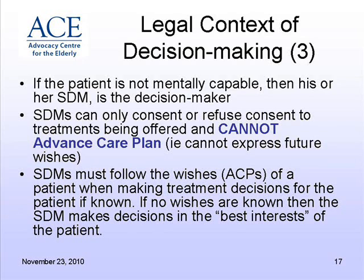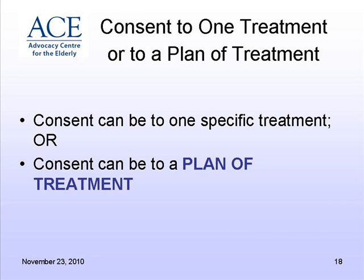If the substitute knows of wishes — such as an advanced care plan made by the patient — then they have to comply with that. If there are no known wishes, they have to act in the person's best interest. Consent can be to a specific treatment or to a plan of treatment. There is often confusion about what the substitute can do here. A substitute can consent to a plan of treatment — for example, a decision about CPR based on the patient's current health condition. But they can't say that someday if a surgery might be needed they'll consent now. As a person, I can say I wouldn't want to be hooked up to machines, but my substitute cannot do that — they can only make those decisions at the time when treatment is being offered.